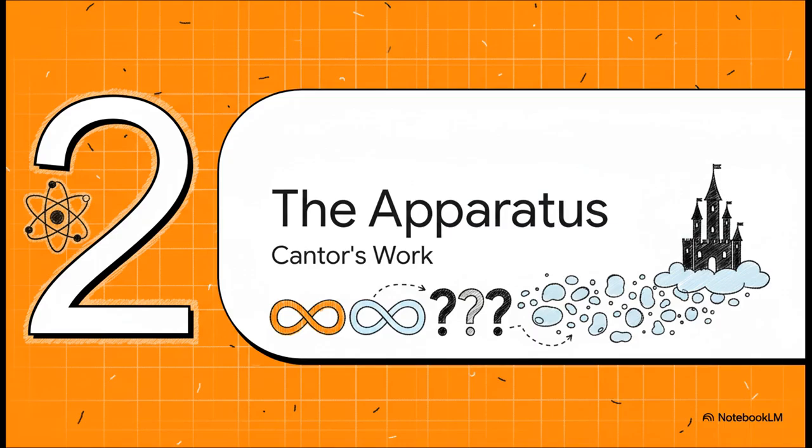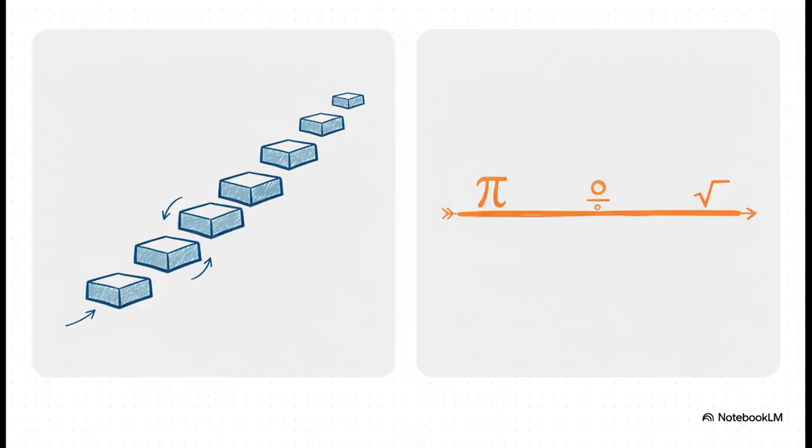So what exactly is this mathematical apparatus that our physicist decided to dismantle? Well, it's none other than the groundbreaking, super influential work of 19th century mathematician George Cantor on the very nature of infinity itself.